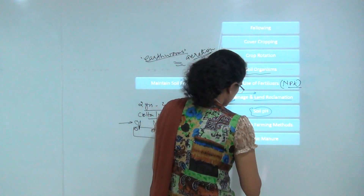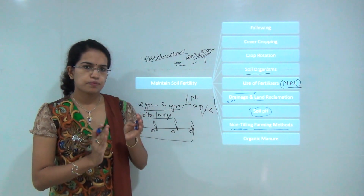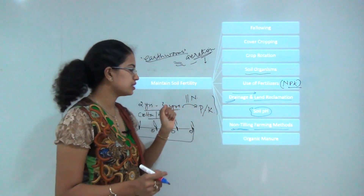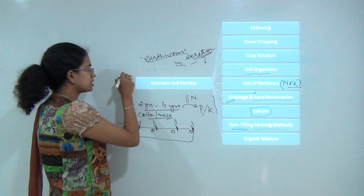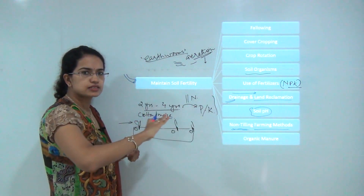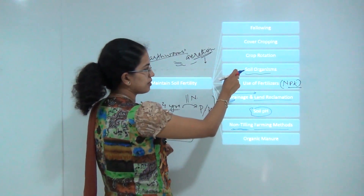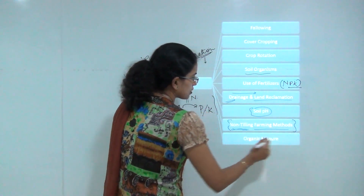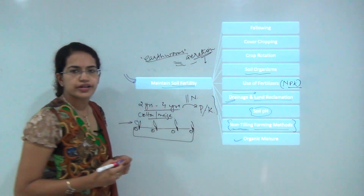Non-tilling farming methods are proposed by those who argue that when you plow fields using manual or automatic instruments, the natural fauna and flora of the soil is killed — for example, soil organisms like earthworms may get killed during plowing. So leaving the farm non-tilled is another important practice to maintain soil fertility. Finally, the use of organic manure is also recommended.